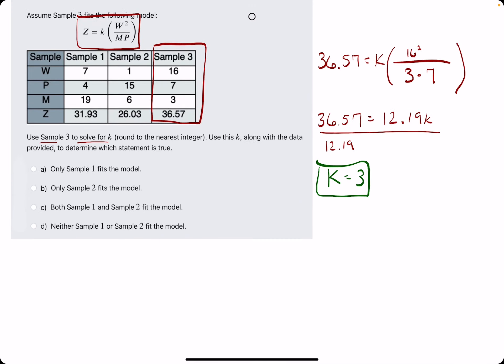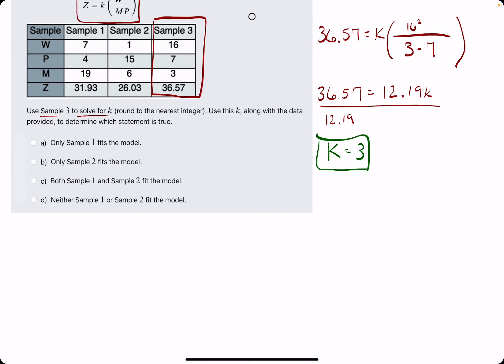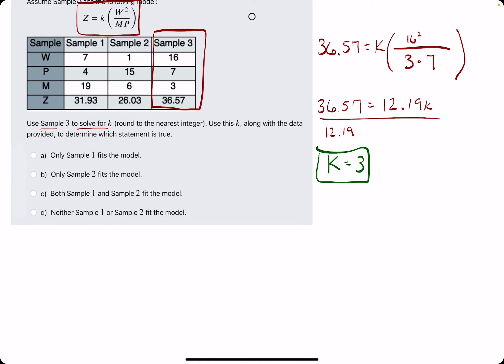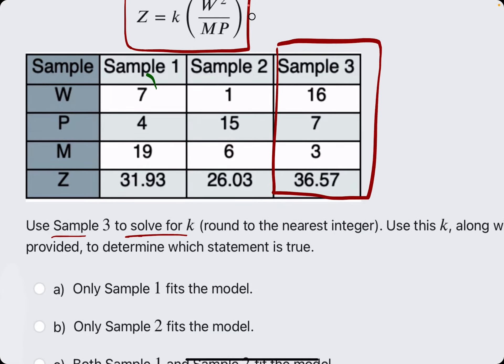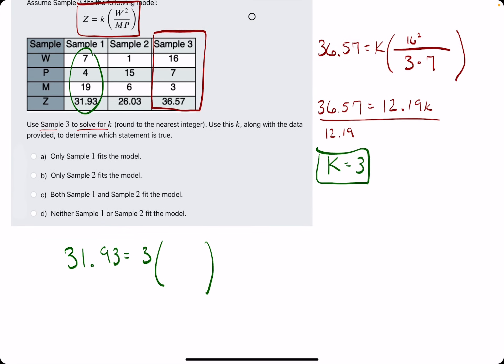So we have k is 3. So now we can start with either Sample 1 or 2. I'll just start with 1, and we're going to plug in everything we know and just see if it's consistent. So we know that z is 31.93. We now know that k is 3, and then using Sample 1's values, we're going to plug them into the equation.